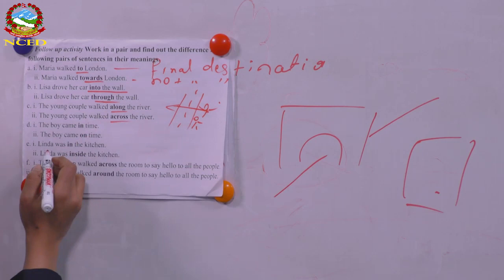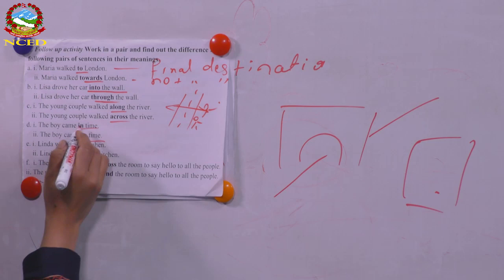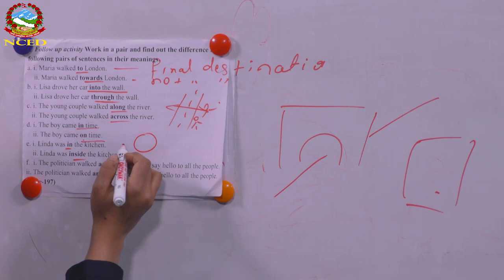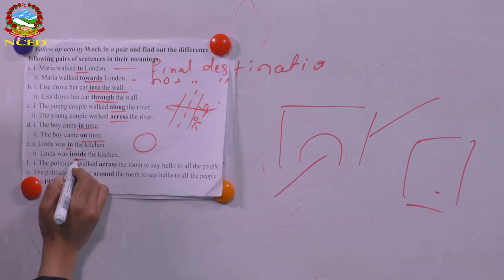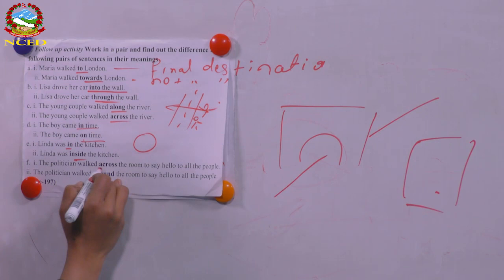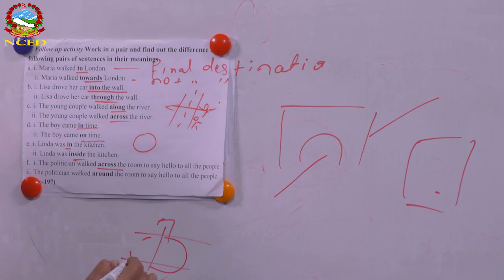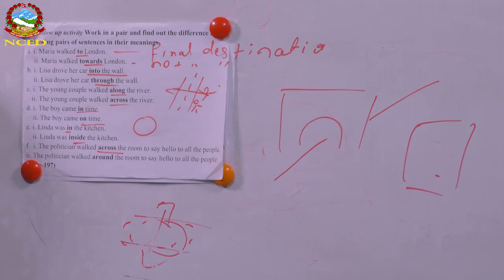'In time' versus 'on time' — in time means before time; on time means at the exact time. 'In the room' versus 'outside' — they mean the same place context, but the speaker wants to say the person is not outside, he is inside. 'The politician walked across the room to say hello to everybody' — from one side to the other. 'The politician walked around the room to say hello to all the people' — moving around in a circular manner.